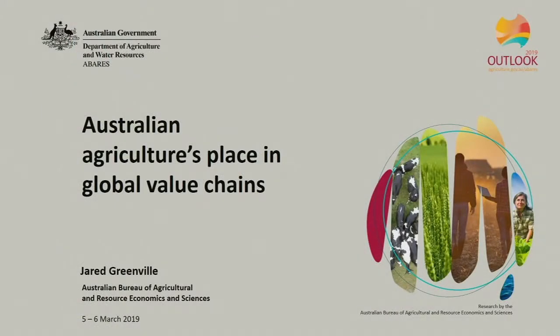As we heard this morning, trade is a big part of Australia's agricultural landscape and production. Today I'm really going to talk about the way that trade is occurring and how it is changing. The way that we trade agriculture and food products is evolving.